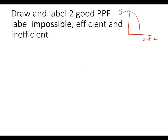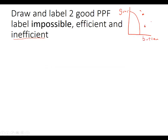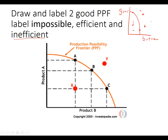Guns represent capital goods and butter represents consumer goods. Some kind of economy can produce anywhere along the PPF line — that's called efficient. Points outside the line aren't possible unless we add more land, labor, and capital. Points inside the line are possible, but you could be doing better — those are called inefficient. So point Y is impossible, points A, B, and C are possible and efficient on the frontier, and point X is inefficient.